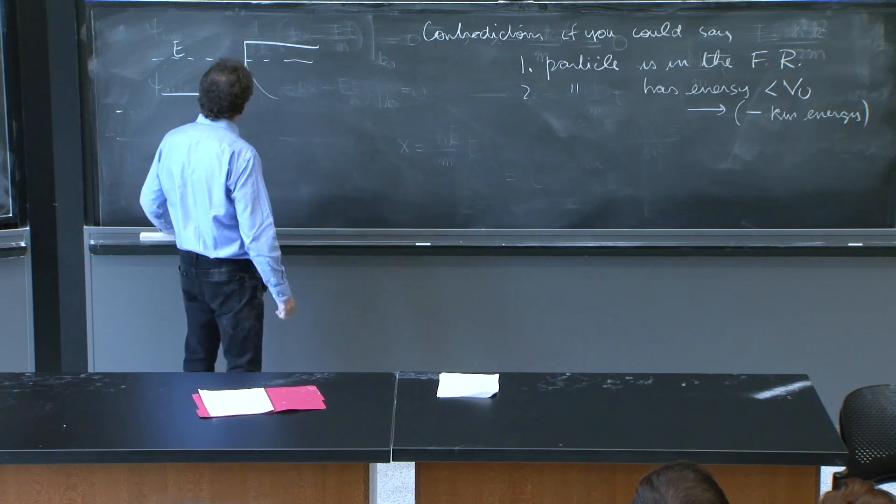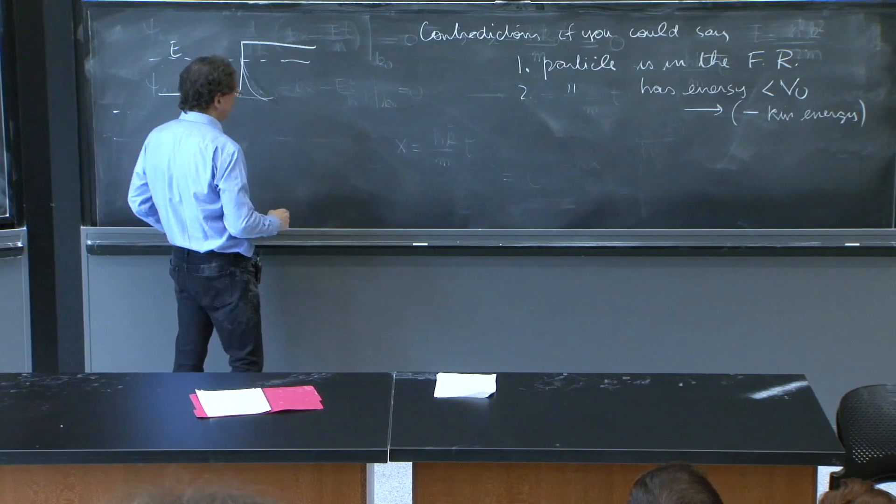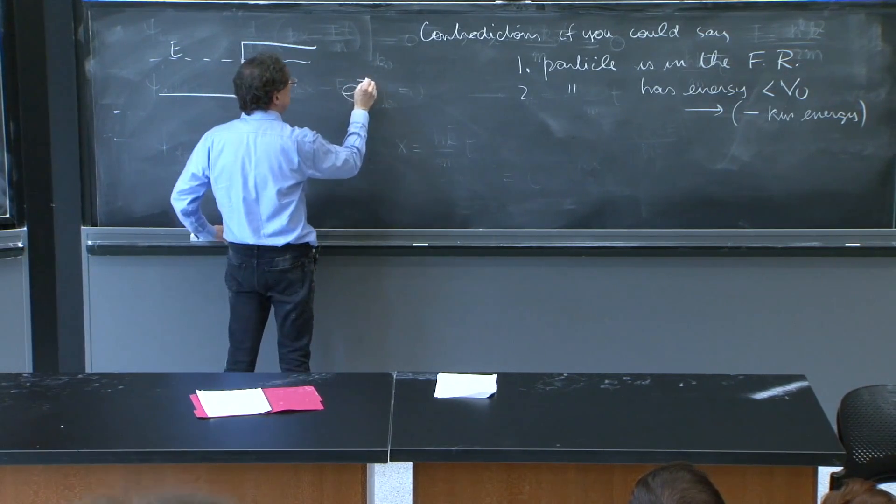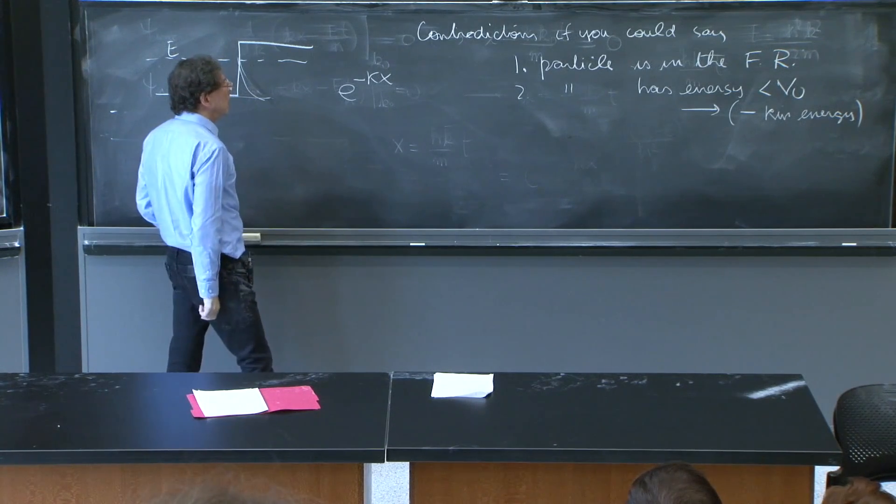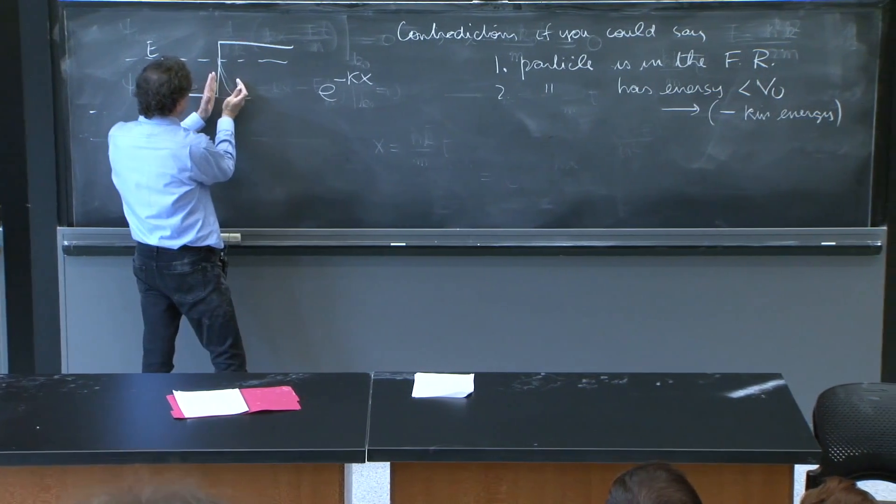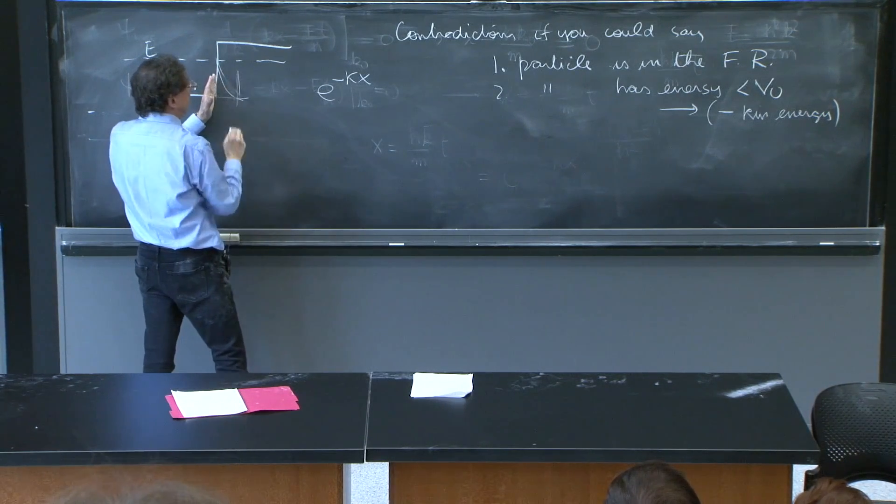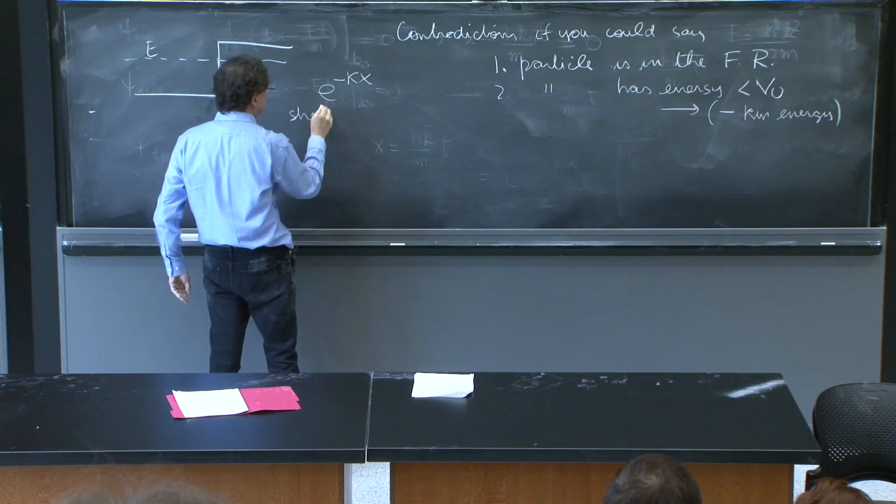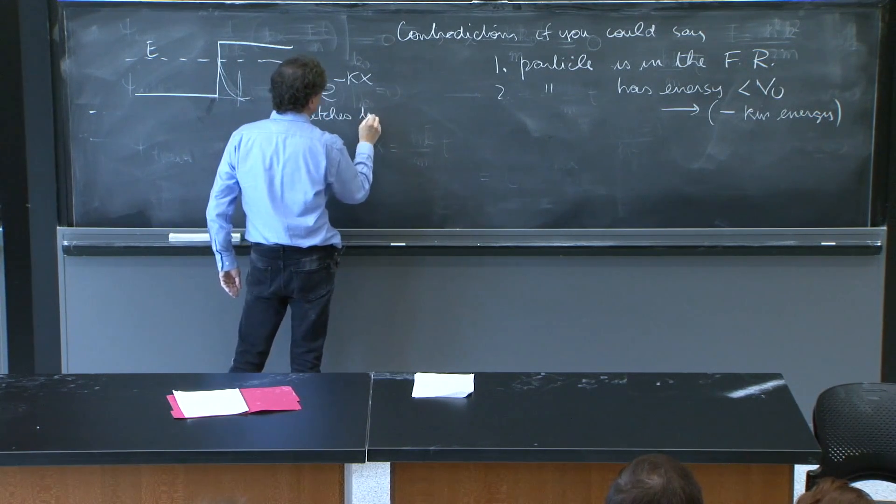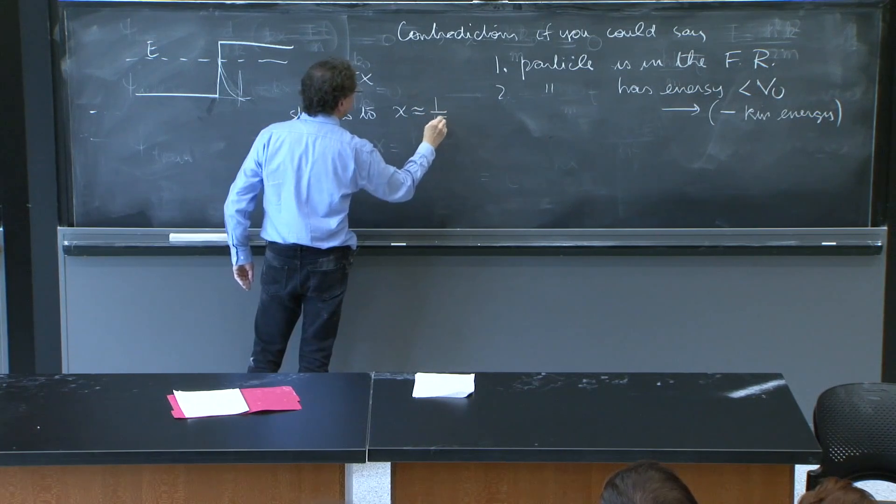So here is the catch. This particle, remember, is governed by e^(-κx) in the forbidden region. So the length scale where you can find the particle—the forbidden region stretches to about x of the order 1/κ.